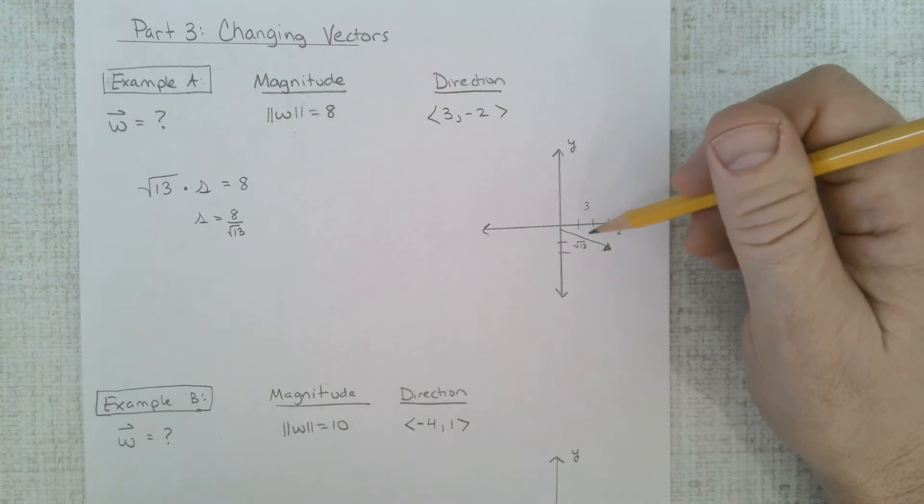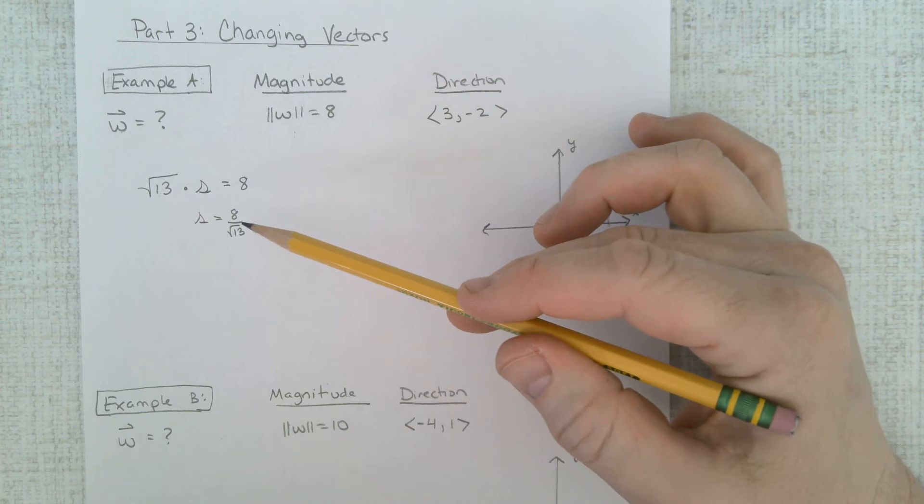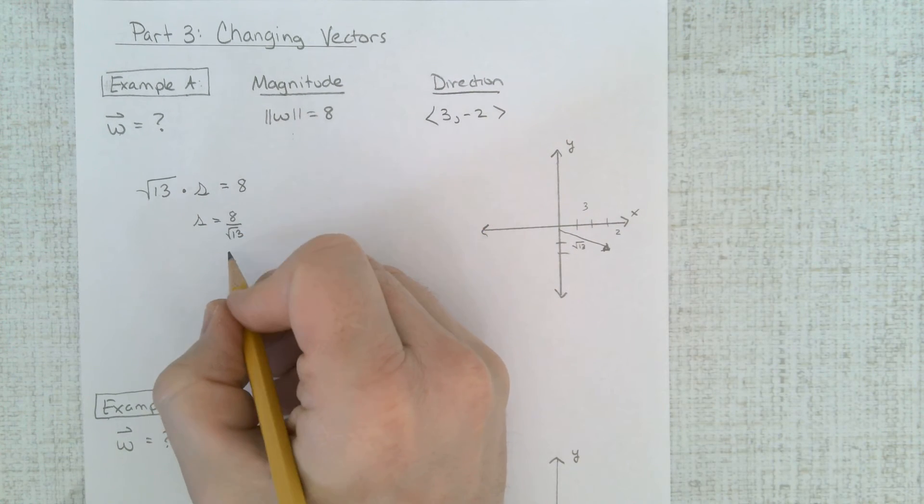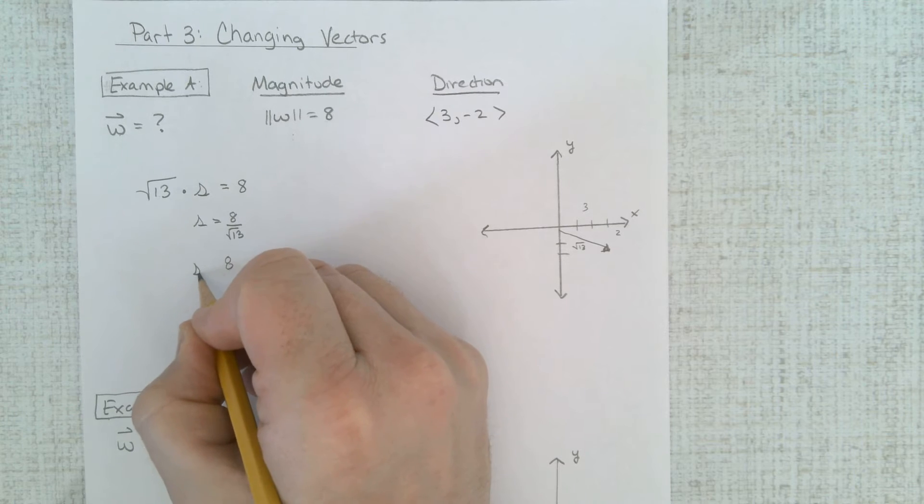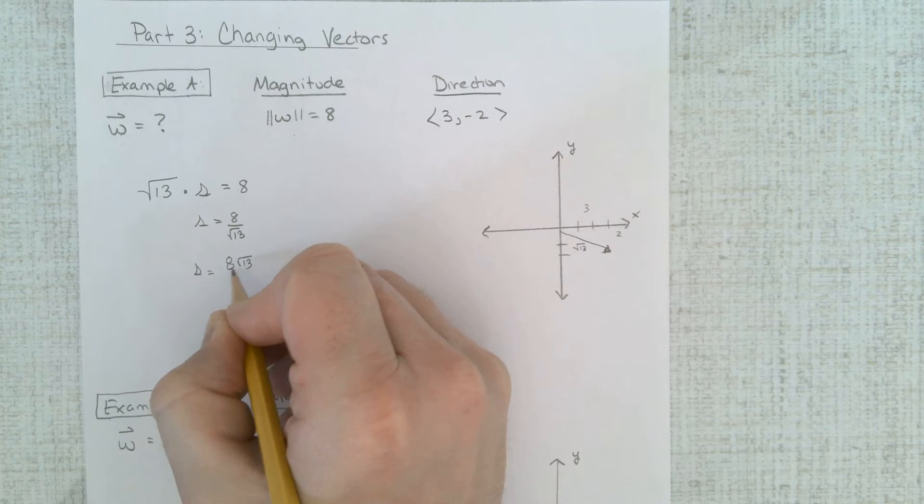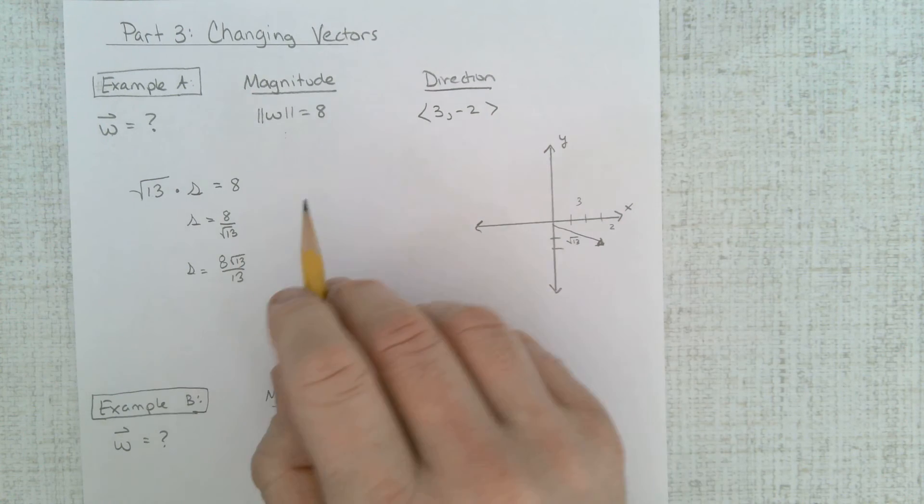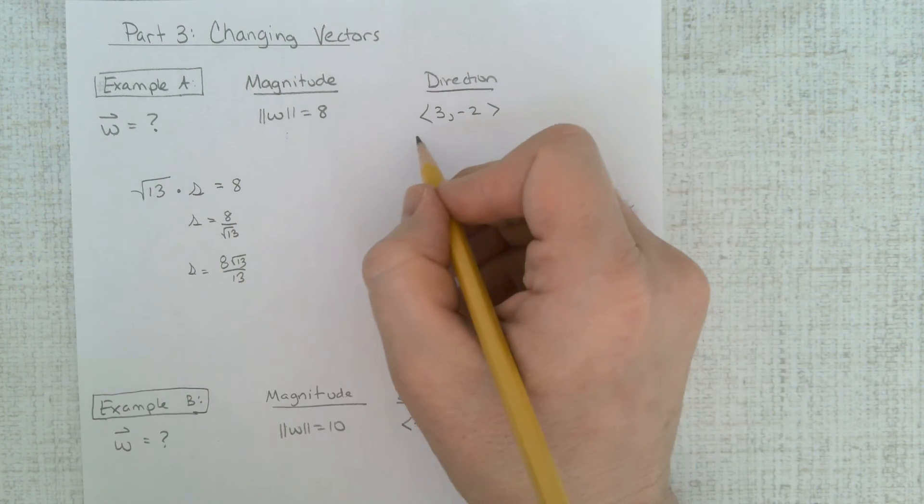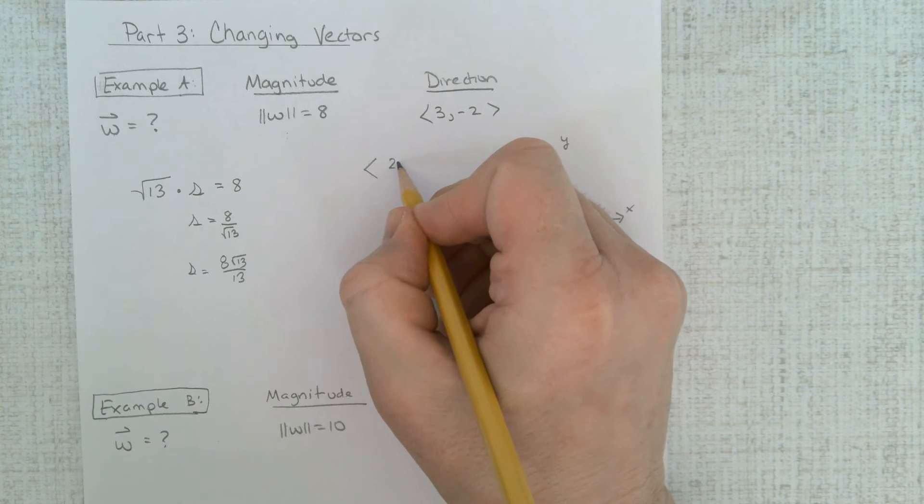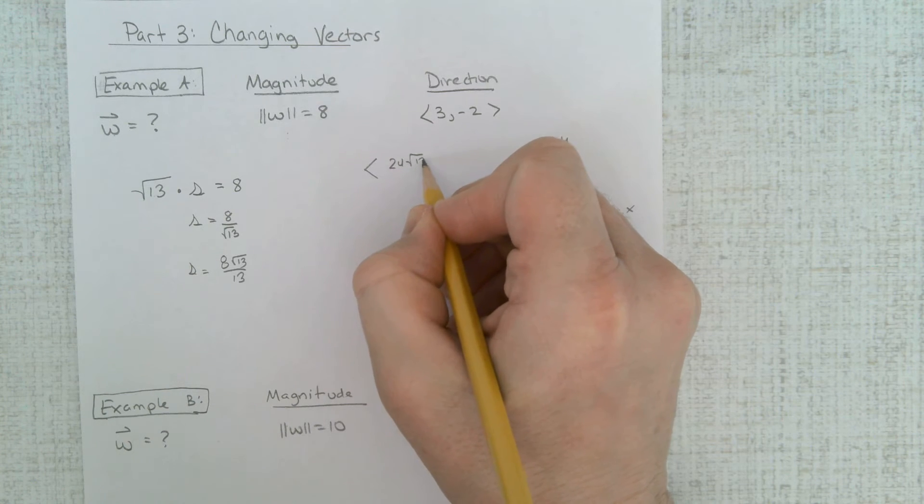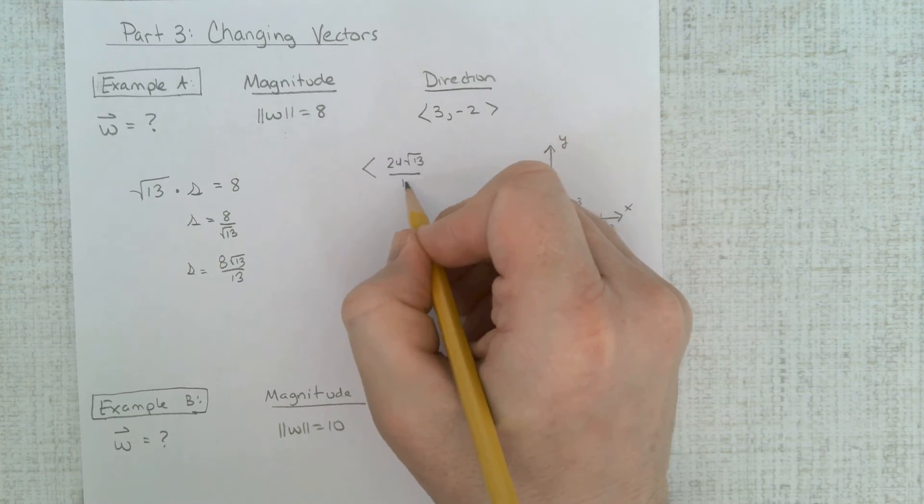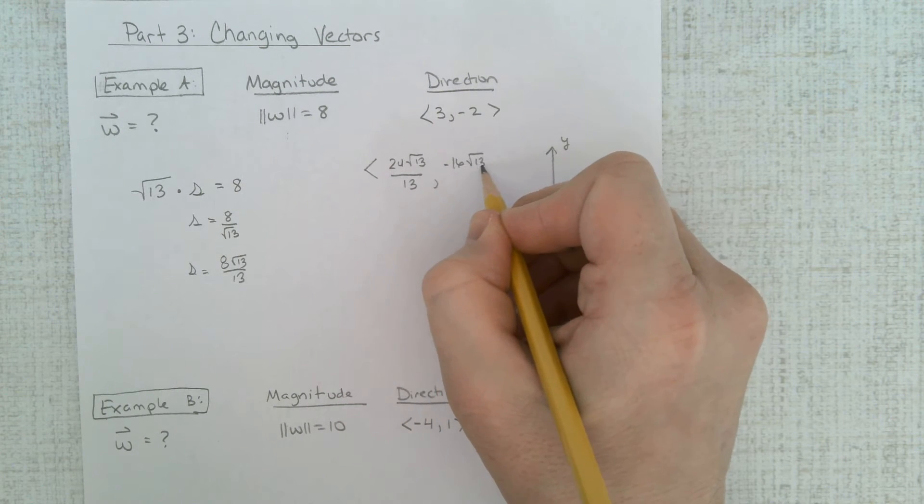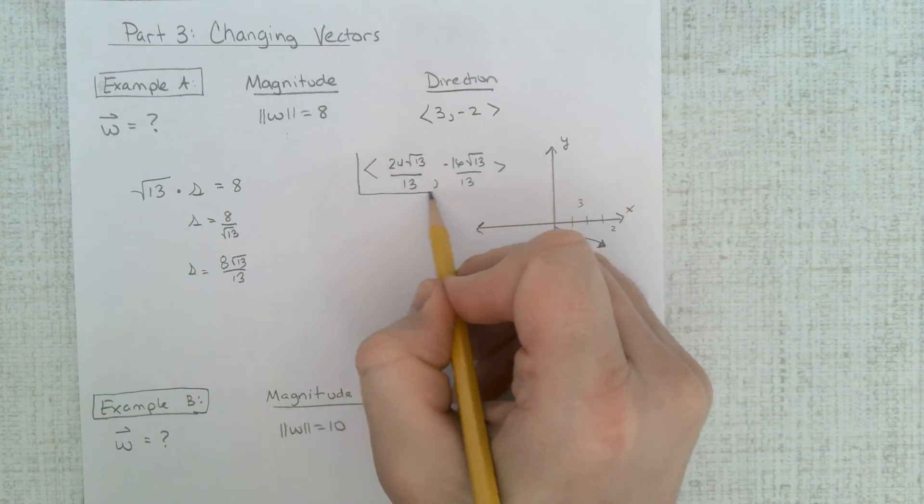I have to take this vector right here and multiply it by this number. Alright, I could clean that up a little bit and make that 8 root 13 over 13 just by rationalizing it and here we go. I'm going to take each one of these distances multiply it by this. The first one would be 24 root 13 over 13 and negative 16 root 13 over 13 and that is my new vector.